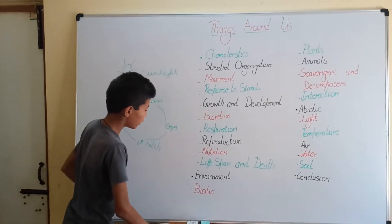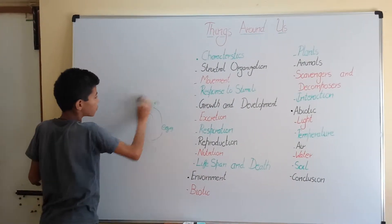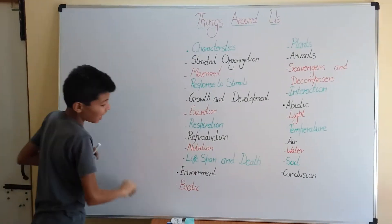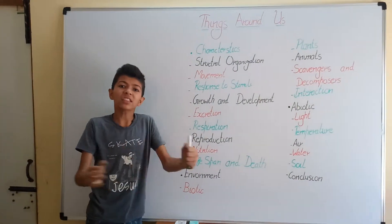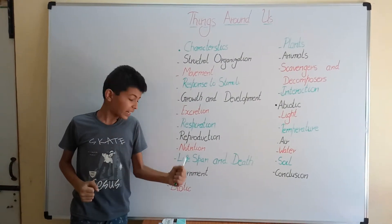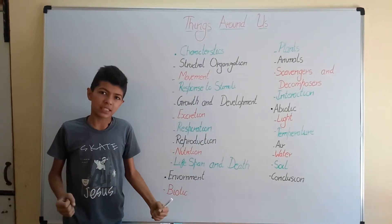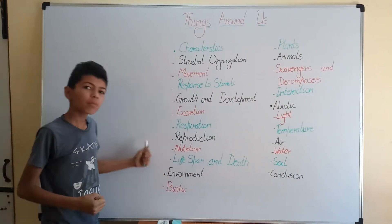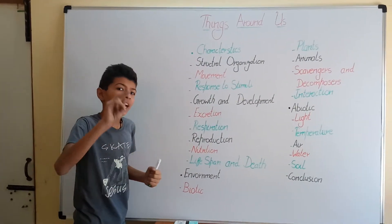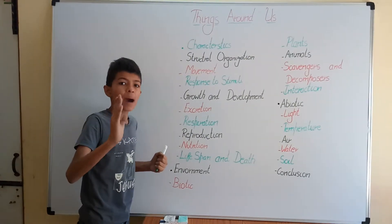Then we have the environment. The environment is all the things that surround us and affect the health, growth, and development of a living organism. This environment can be divided into two parts: biotic and abiotic.